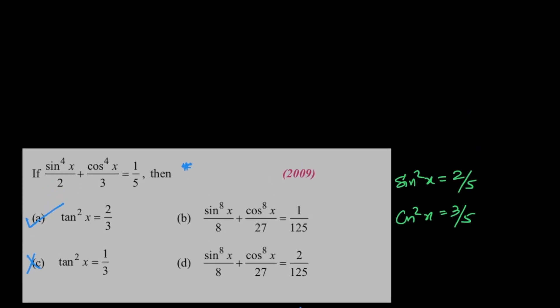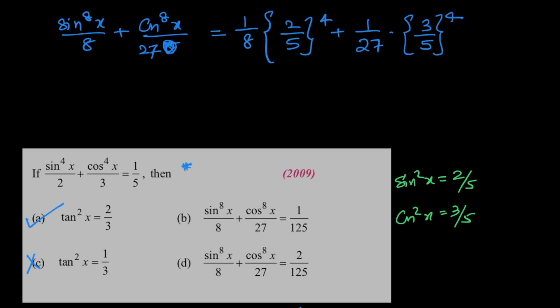Now options B and D we have to check which one is the right answer. So let's see how this can be done. So sin power 8x by 8 plus cos power 8x by 27 comes out to be 1 by 8 times 2 by 5 whole power 4 plus 1 by 27 times 3 by 5 whole power 4. Now this becomes 2 power 4 divided by 5 power 4 plus 3 power 4 by 3 cubed times 5 power 4, which is 5 by 5 power 4. So the answer is 1 by 5 cube.